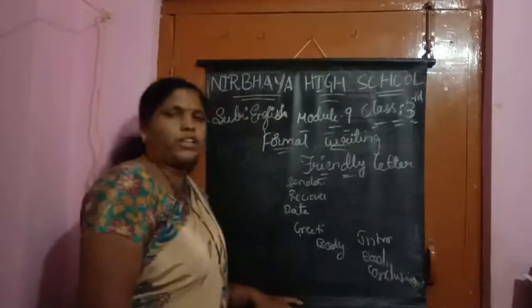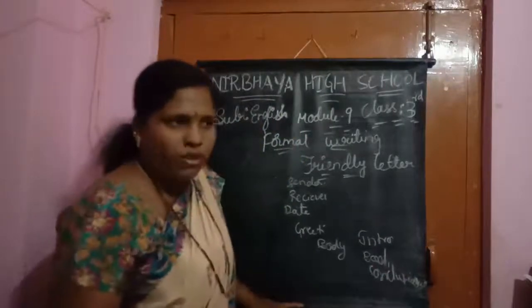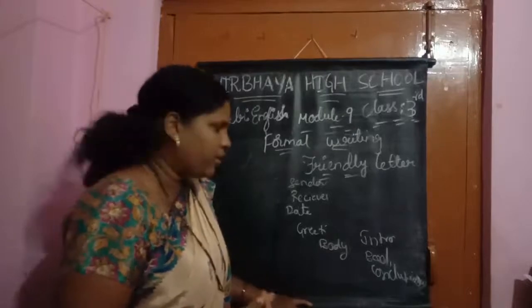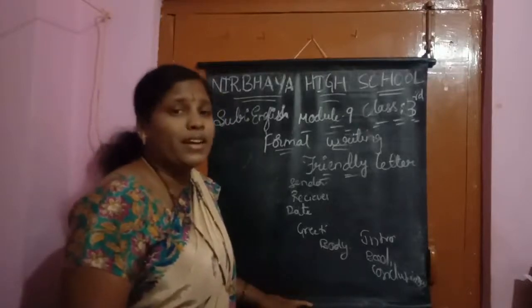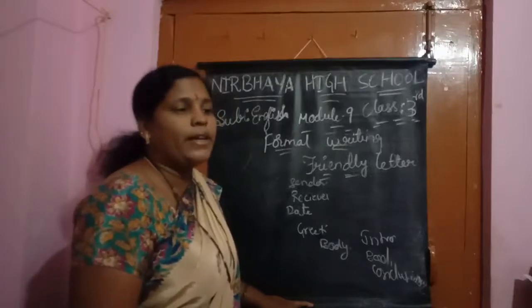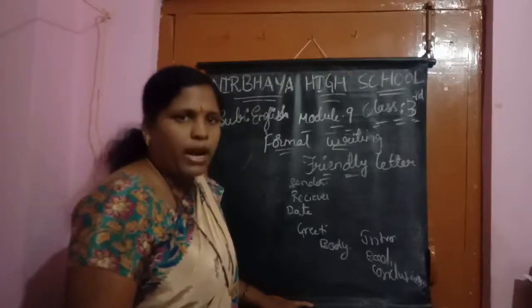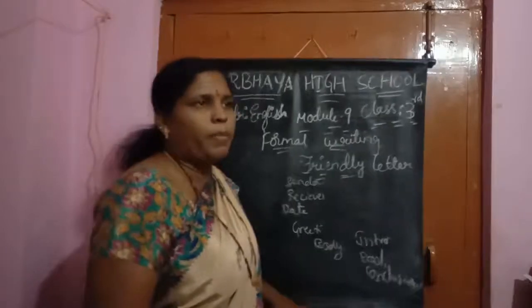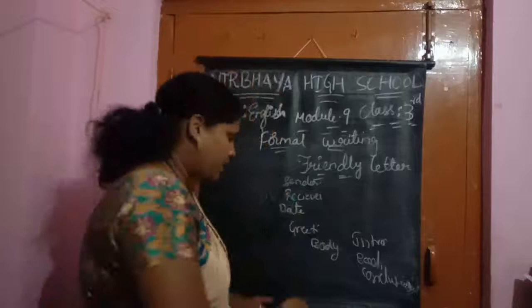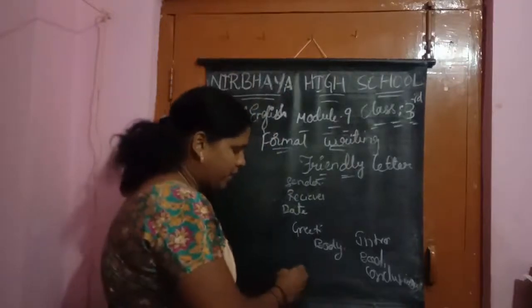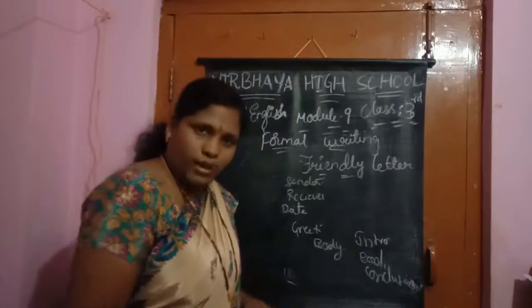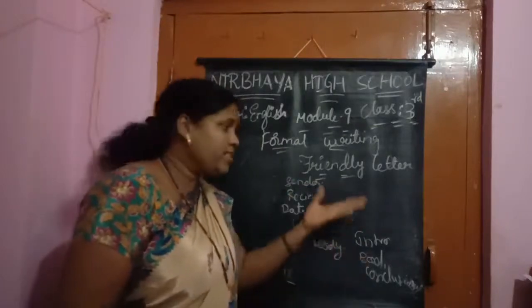The introduction is where you introduce yourself — 'How are you? I am fine. How are your parents?' The body is why you have written the letter — the detailed information. The conclusion includes closing lines like 'Tell your parents to bless me,' and ends with 'With love' followed by your name.